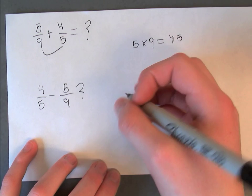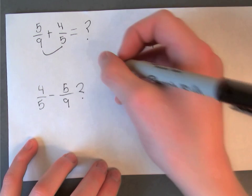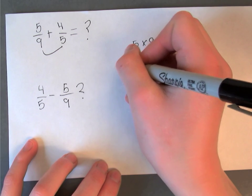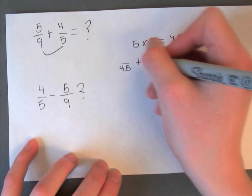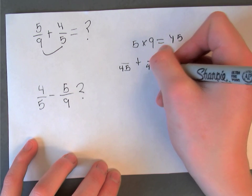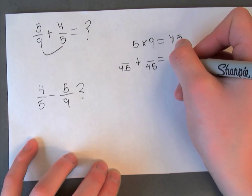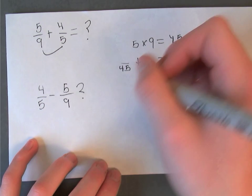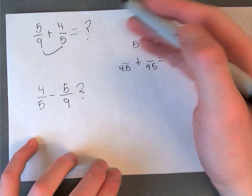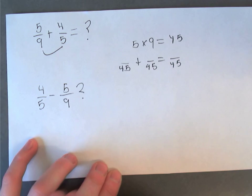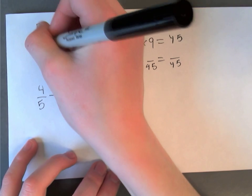And then so our new denominator is 45 plus 45 equals something over 45. So here we did nine times five to get 45.